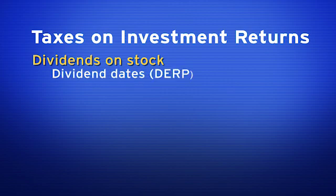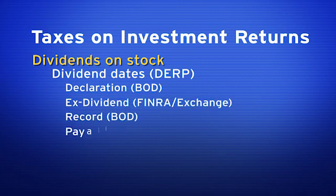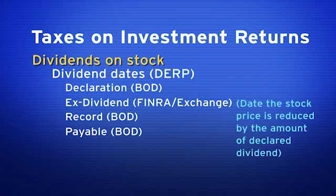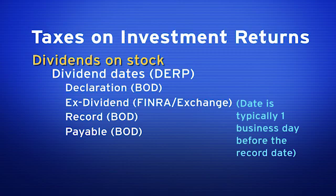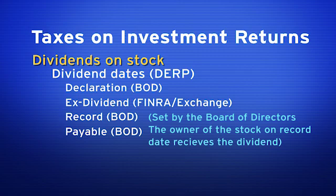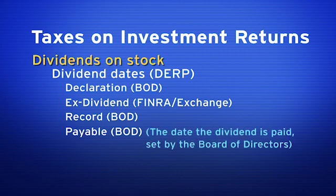There are dates associated with dividends. The first is the declaration date, next is the ex-dividend date, then the record date, and finally the payable date. The declaration date is set by the board of directors — it's the date the dividend is declared. The ex-dividend date is when the price of the stock is reduced by the amount of the declared dividend; it is set by the exchange and is typically one business day before the record date. The record date is set by the board of directors — whoever owns the stock on the record date receives the dividend. The payable date is the date the dividend is paid, and that date is also set by the board of directors.